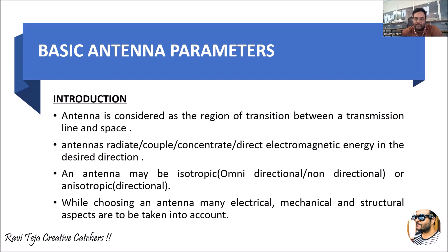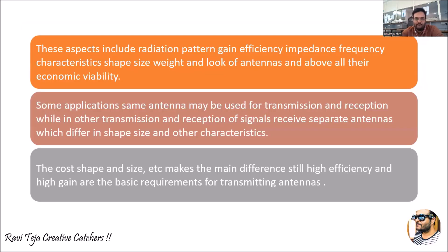While choosing an antenna, many electrical, mechanical, and structural aspects are to be taken into account. Based on these things, the antenna mechanism — the wave flowing through the antenna — will have several properties. These aspects include radiation pattern, gain, efficiency, impedance, and frequency characteristics, based on the particular structural shape of the antenna.